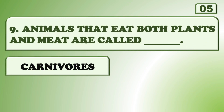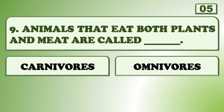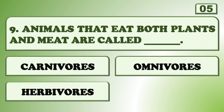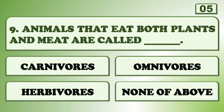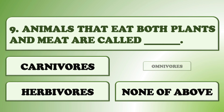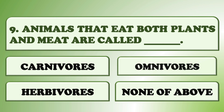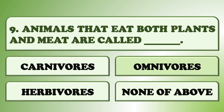Animals that eat both plants and meat are called... Omnivores!